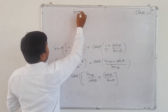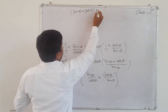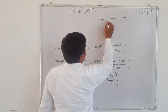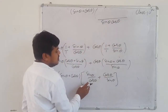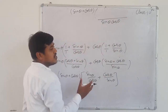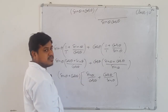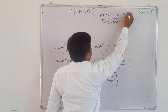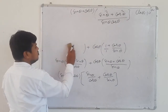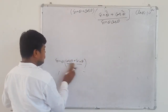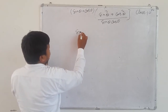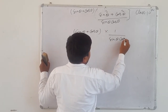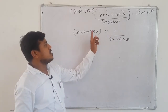The bracket is the same: sin θ + cos θ. Take LCM of sin θ and cos θ — LCM is sin θ·cos θ. Divide by cos θ: gives sin θ; multiply numerator: sin × sin = sin²θ. Similarly cos²θ. We know sin²θ + cos²θ = 1. So after that, sin θ + cos θ × (1 / sin θ·cos θ).